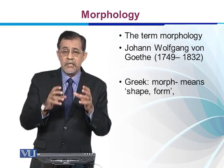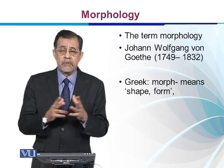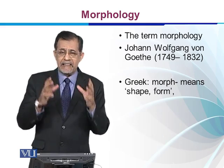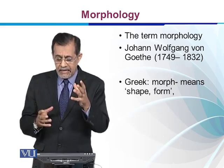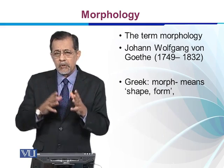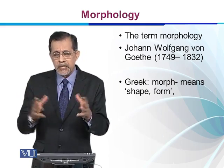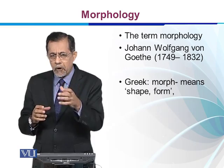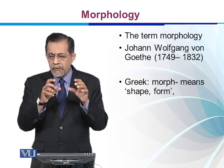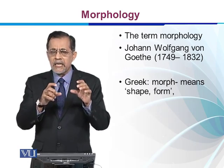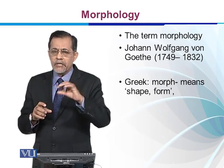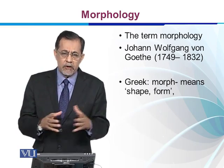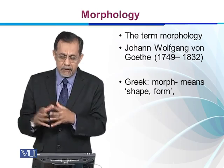Morphology has two parts: Morph and ology. In Greek, Morph means shape and form, and ology means the study of. So morphology is the study of shape and form of words. In Morphology we see how words form their shapes — it is the study of the shapes of words.